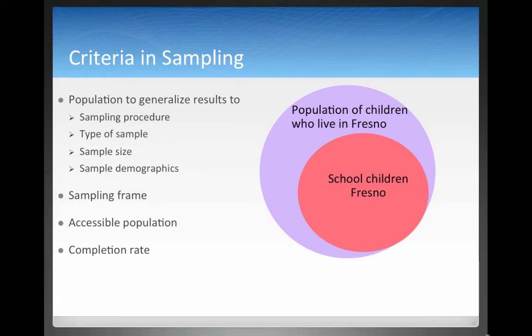Another thing to consider when sampling: if you were to send out a survey, you would have your sampling frame. This would be all the people you want to send an email to and request that they complete your survey — all those email addresses represent your sampling frame, or the total number of people who could possibly respond. The accessible population is the people who could possibly do it. The completion rate is the people who actually complete your survey, so even though you might send it to 100 people, only 50 might complete it.